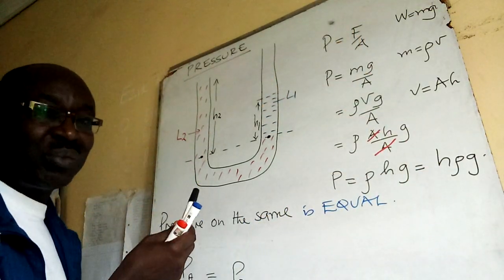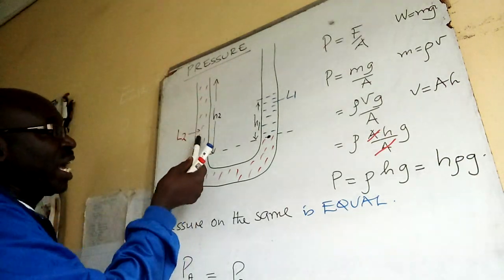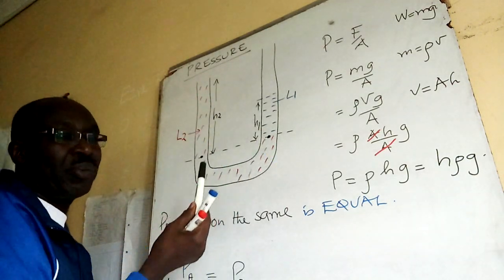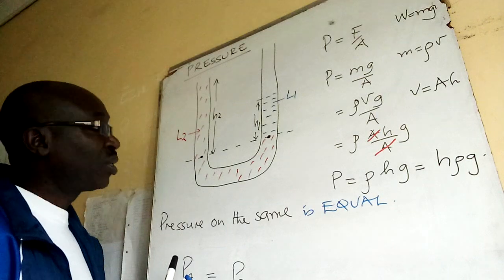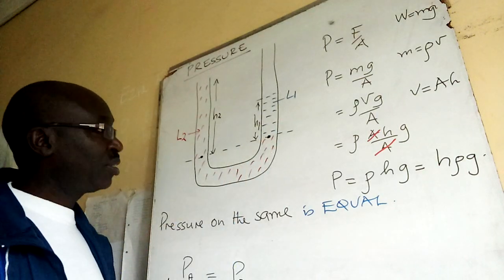Now come to our diagram. You have liquid L2 in red, up to that level, and then you have H1.